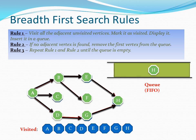We remove G from our queue because it doesn't have any unvisited vertices. Finally, we have H in the queue. H doesn't have any adjacent vertex, so as per rule two we can remove it from the queue as well. Now the queue is completely empty, so we don't have any other vertices to process. We have visited all the vertices that were in the path. You can see the visited list with all the vertices shown.